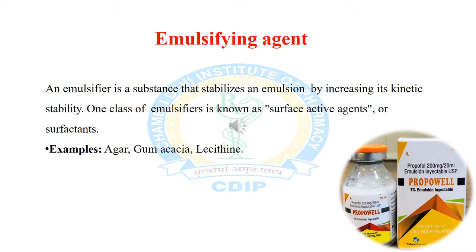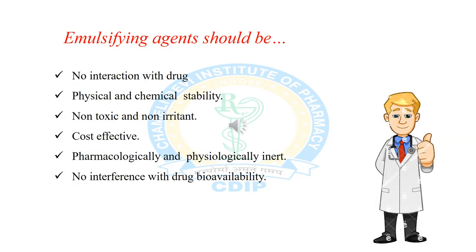Emulsifying agents are used to reduce the surface tension of globules. Examples of emulsifiers are agar, gum, and lecithin. In emulsion formulation, emulsifying agents are used to reduce the interfacial tension between the two phases — oil phase and aqueous phase — and thus make them miscible with each other to form a stable emulsion.